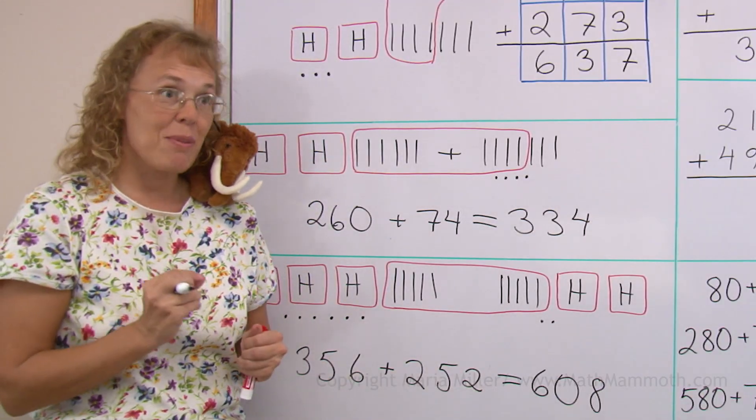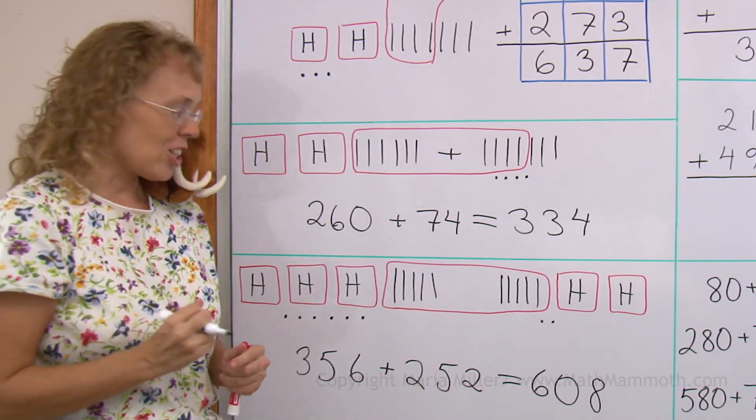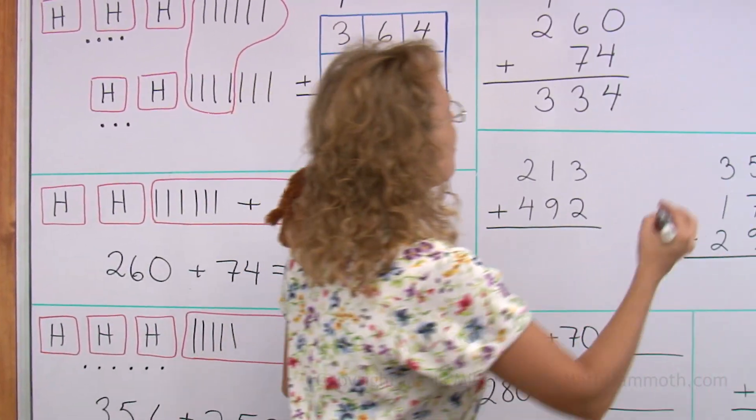And let's do the same addition over there, writing the numbers under each other. Three hundred fifty-six, two hundred fifty-two.